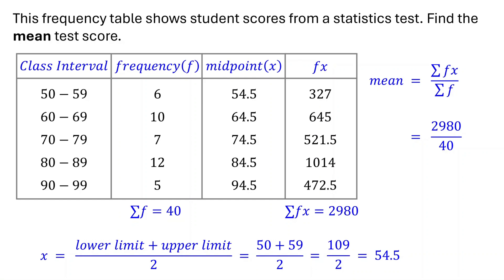Finally, divide the sum of the products by the total frequency. This gives us a mean test score of 74.5.